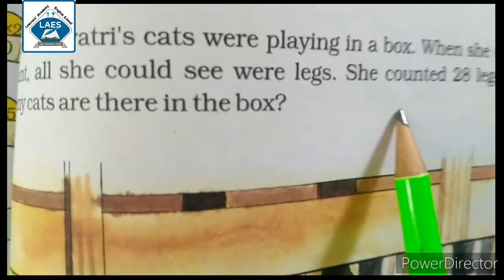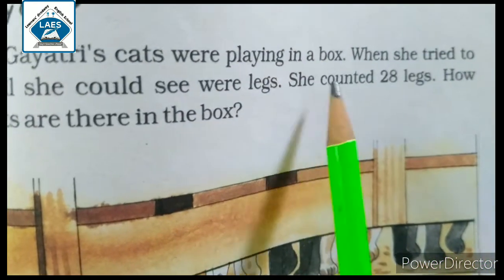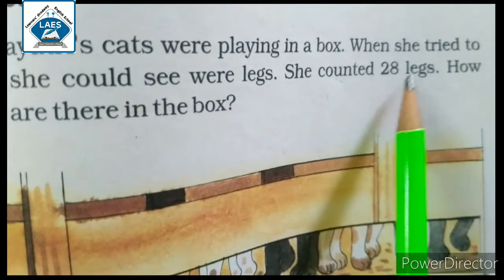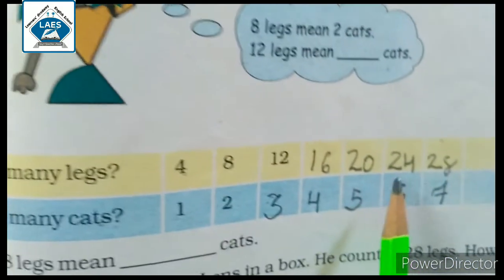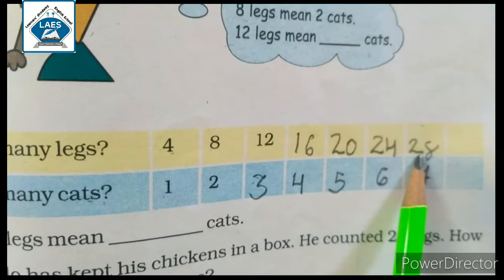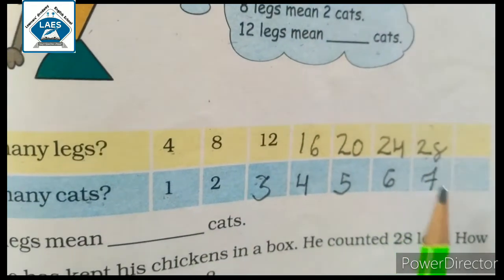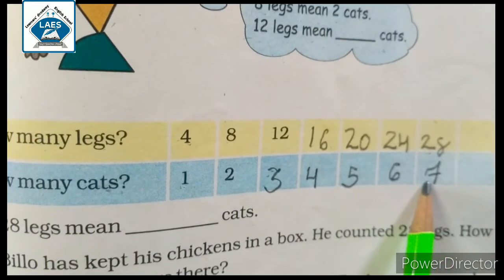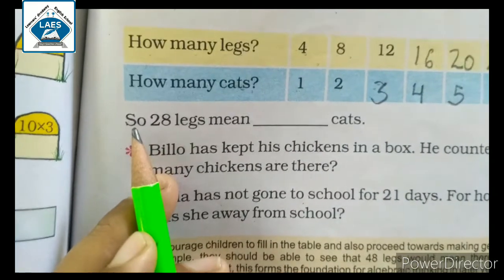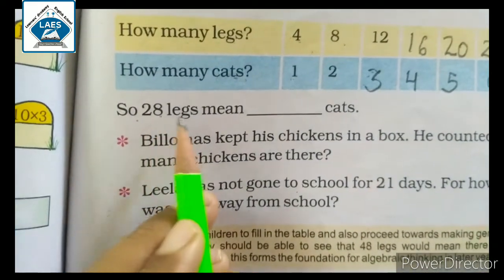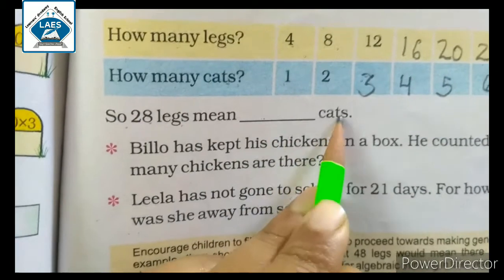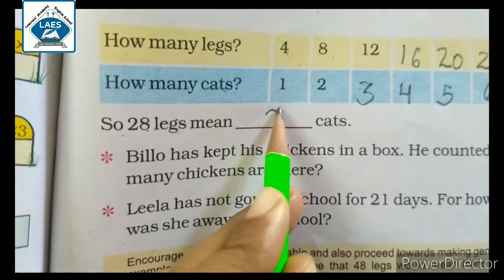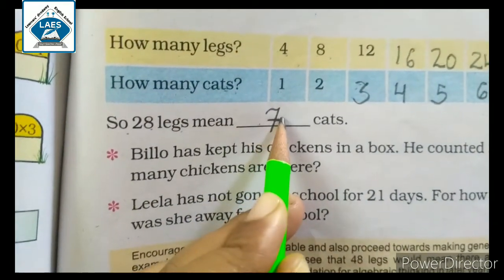Yahan par question mein likha hua hai: she counted twenty-eight legs. Twenty-eight legs usne count kiye the. To twenty-eight legs to humne bhi yahan par likh liye, to cats kitni hongi? Seven. So twenty-eight legs mean dash cats — kitni cats hongi? Seven cats.